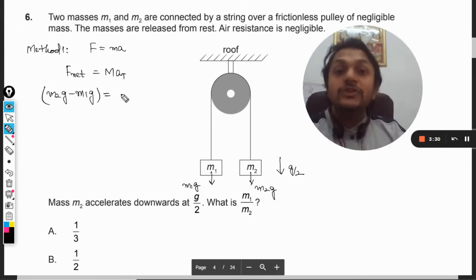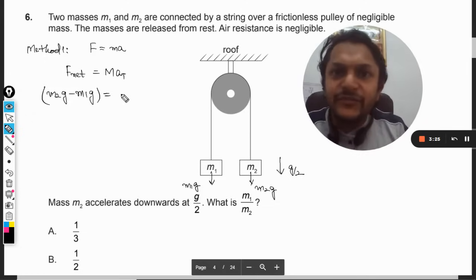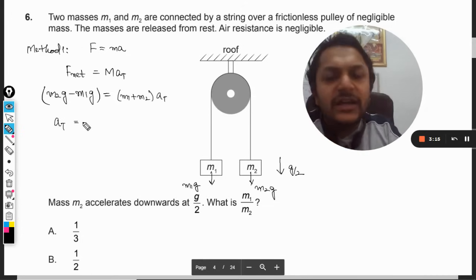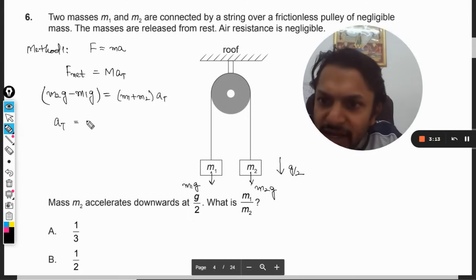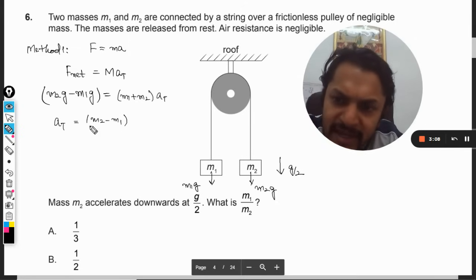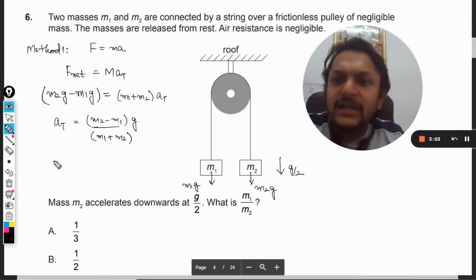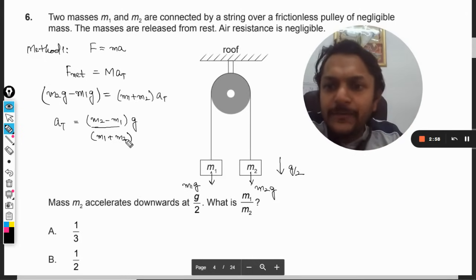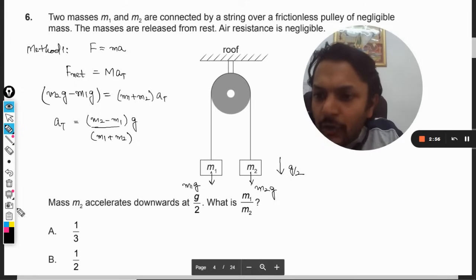So m2g minus m1g. What is the total mass brought into motion by this force? Obviously m1 plus m2, that is the total mass here. And this is a. From here I will find a. The total acceleration, a, is: taking g common, it will be (m2 minus m1) times g divided by (m1 plus m2).